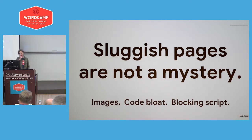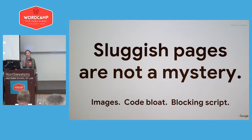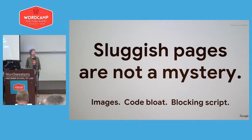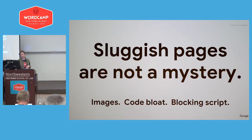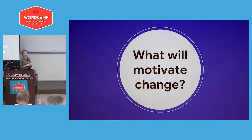Having looked at some of the data, the root causes of the slow, janky web are probably not a surprise. You all know what's going on — it's images, it's code bloat, legacy code, blocking scripts, it may be ads, it may be the new thing your marketing manager or business manager wants to put on the page. We know what the culprits are from a technical standpoint, and that hasn't translated into change for most of the web. Perhaps we need to up-level the conversation and talk about the levers available to us to propel change.